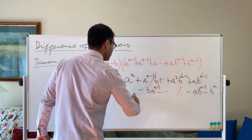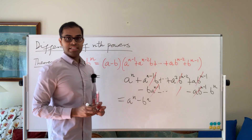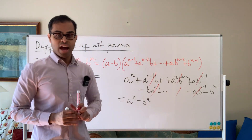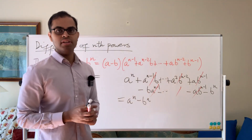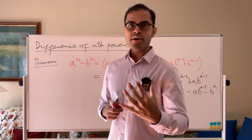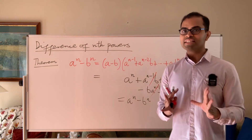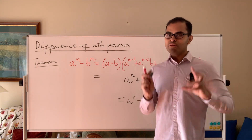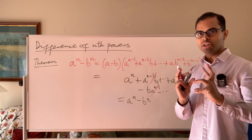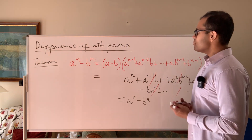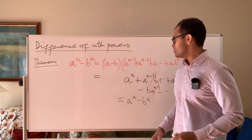I've done a video on the difference of cubes formula — I recommend checking that out if you haven't seen it, as it's a lower-level version of this. Now we're going to use polynomial long division, which I explained in a simpler way in that video. Here we're going a level higher in sophistication, but don't worry — it'll be very accessible.